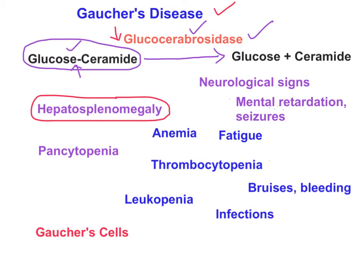Apart from hepatosplenomegaly, Gaucher's disease patients show neurological signs. As with other sphingolipidoses, neurological signs include mental retardation, seizures, and hypotonia — rigidity and related signs and symptoms.